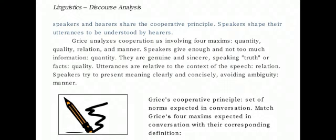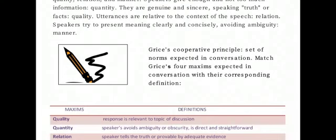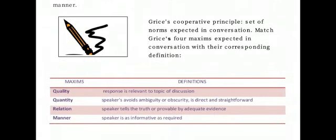The maxim of relation means that utterances are relative to the context of the speech — we speak things related to a particular topic and do not deviate from the norms. The maxim of manner means speakers try to present meaning clearly and concisely, avoiding ambiguity. These are the four maxims of Grice's cooperative principle — quantity, quality, relation, and manner — which are norms expected in conversation.